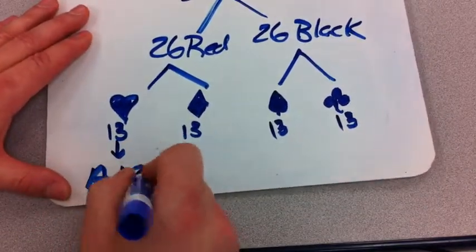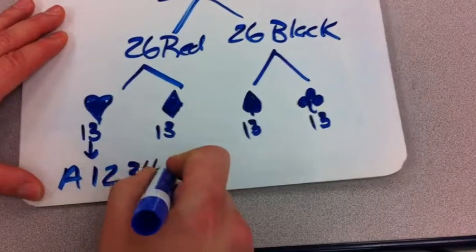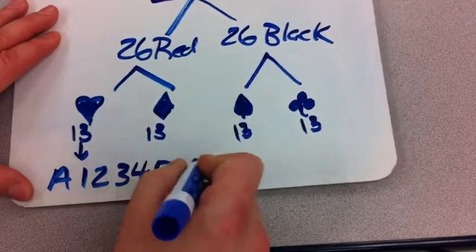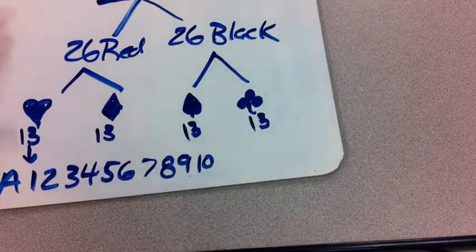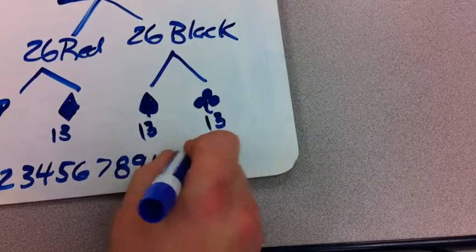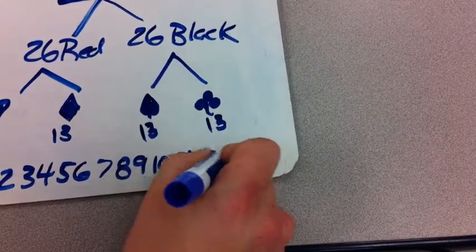Ace. One, two, three, four, five, six, seven, eight, nine, ten. Okay, from there it goes jack, queen, and king.